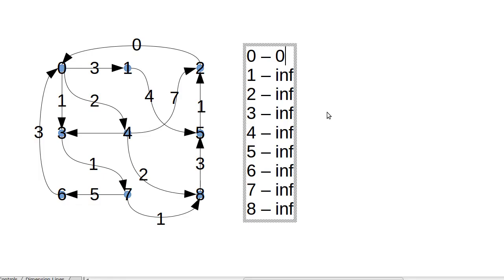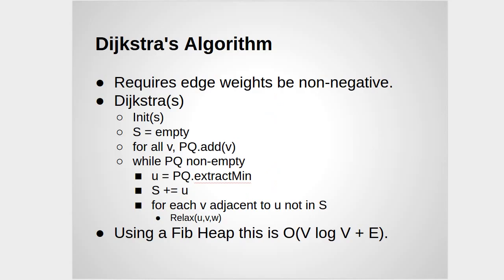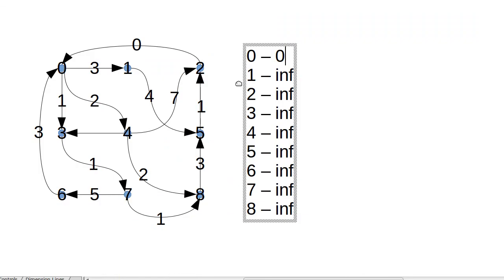So what happens? Well, obviously, the first thing that we pull off the priority queue is zero, because zero is less than all the infinities. I'm going to put little stars by things when they get pulled off and added into S, so that we know that they have been processed and we are done with them.